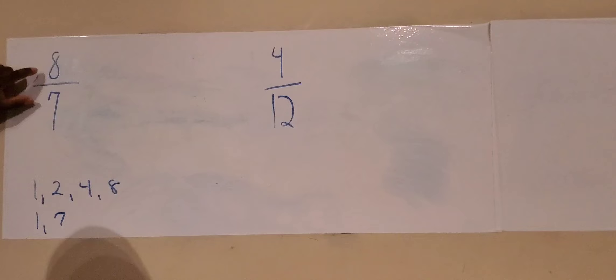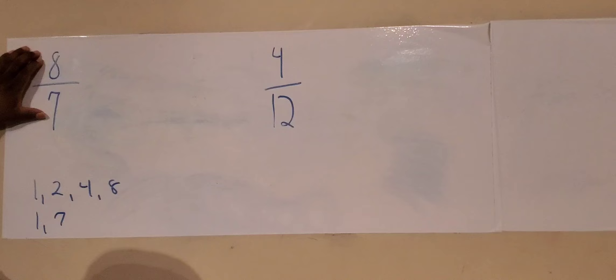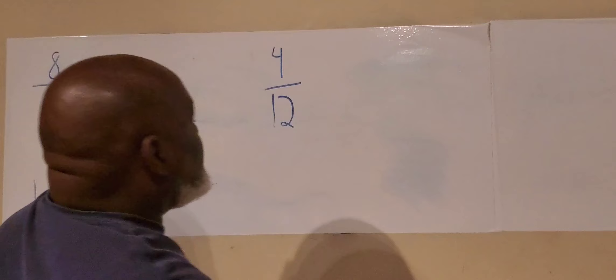Step two, do we have any like terms in the numerator and denominator? We see that we do not have any except for ones. And if we divide by one, it's only going to bring us back to the original answer or the equation. And in this case, eight sevenths is in simplified form.